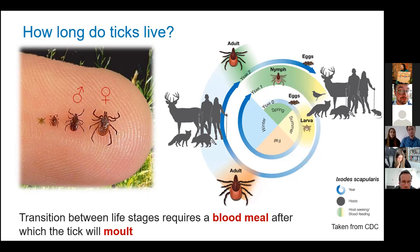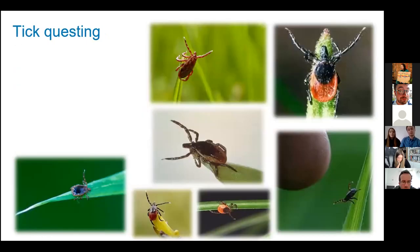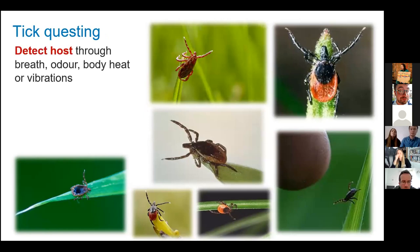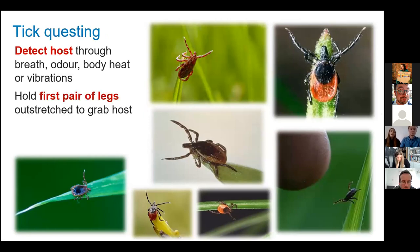To find these blood meals, ticks exhibit a behaviour known as questing. This is where they climb up either long grass or foliage, roughly to about the height of the hosts they want to latch onto, and then they stick out their two front legs. This has two main purposes: the first is to detect hosts through sensing breath or CO2, odour, body heat, and vibrations through organs in their front legs known as Haller's organs. And once in this position, it's a really easy way to just latch onto whatever hosts are passing by.